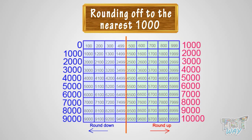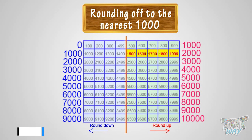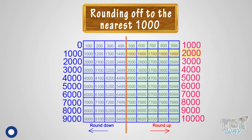Likewise, if you want to round off numbers 1,001 to 1,499, they will be rounded down to the previous 1,000, that is 1,000, because they are below the 500 mark. And numbers 1,500 to 1,999 will be rounded up to the next 1,000, that is 2,000, as they are above the 500 mark.